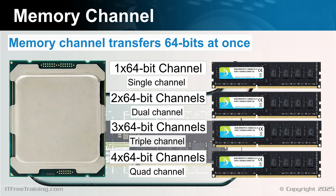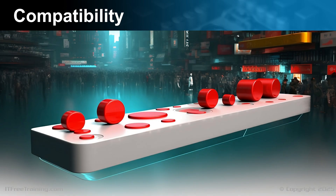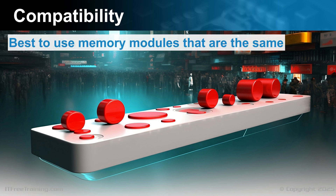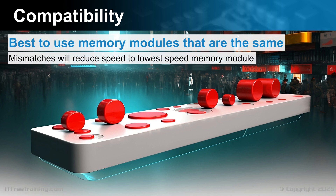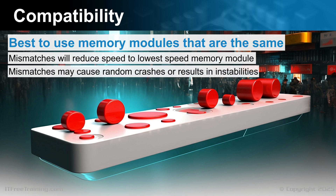If you are planning to use multiple channels, you next need to look at compatibility problems. When using memory modules in a computer, when possible, it is best to use memory modules that are the same. In some cases this may not be possible. Mismatched memory modules will reduce the speed to that of the lowest speed memory module. In some cases, mismatched memory modules may cause random crashes and other instabilities. You can always give it a try and run a memory tester to see if your computer is stable.